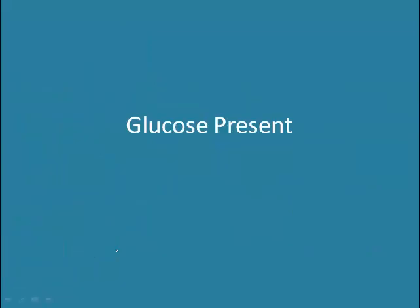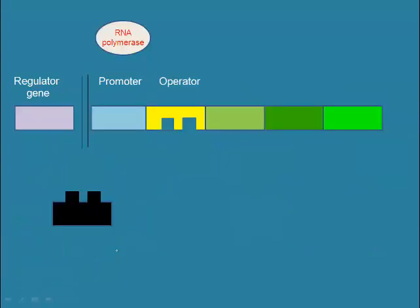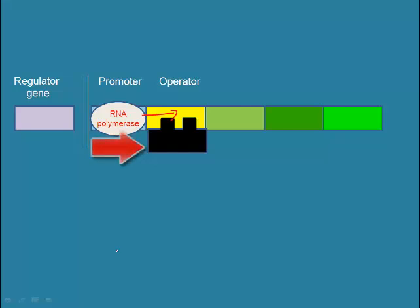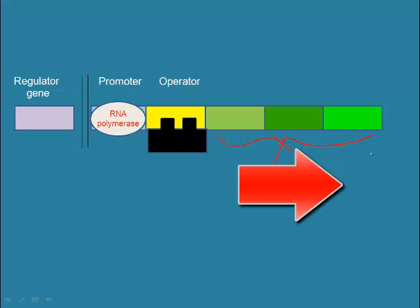When glucose is present, it is not desirable to waste cellular energy creating enzymes to digest lactose. The genes that code for these enzymes need to be repressed, or shut off. The repressor protein binds to the operator, and RNA polymerase binds to the promoter but is unable to move past the operator because it's being blocked by the repressor. As a result, the genes that code for the enzymes that break down lactose cannot be transcribed.